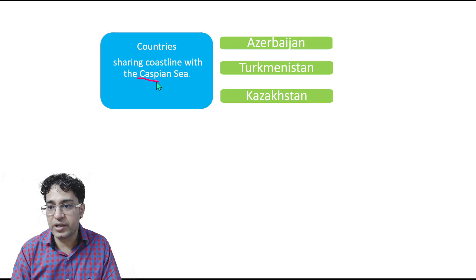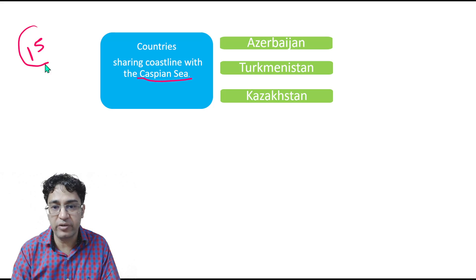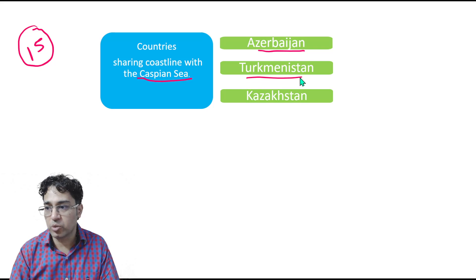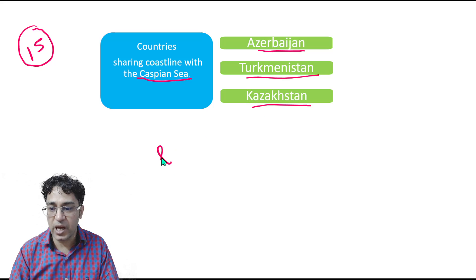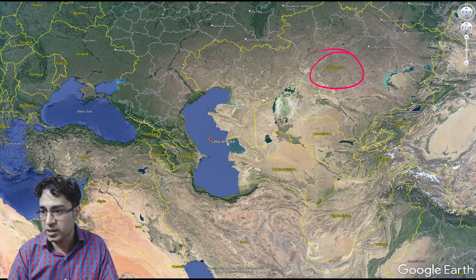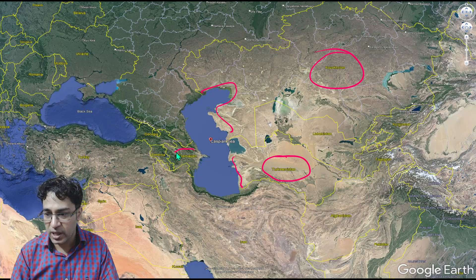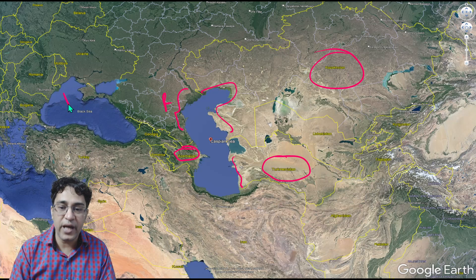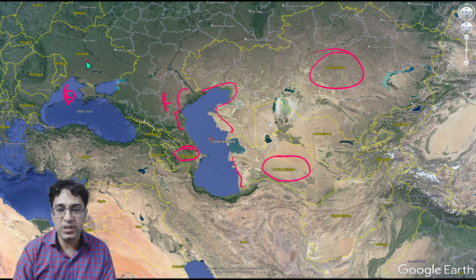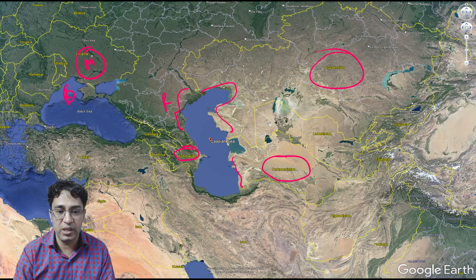There can also be a possible question regarding the countries that touch the Caspian Sea out of the 15 former USSR countries. Those are Azerbaijan, Turkmenistan, Kazakhstan, and Russia. On the map: Kazakhstan is touching the Caspian Sea, Turkmenistan is also touching the Caspian Sea, Azerbaijan is touching it, and so is Russia. For the full list of Caspian-bordering countries with a memory trick, watch my separate video on that topic.